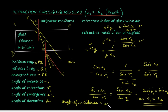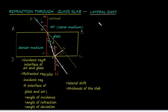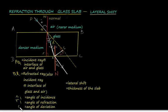Now let us understand what lateral shift is and derive an expression to calculate it. In this diagram, PQ is the incident ray, QR is the refracted ray, i1 is the angle of incidence, and r1 is the angle of refraction. The angle d is the angle of deviation.